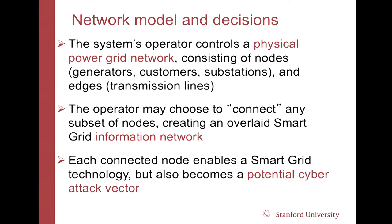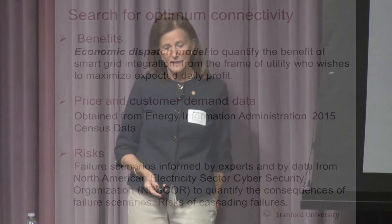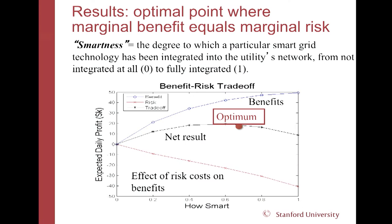What Matt Smith did with me was a network model to look at the decisions that had to be made. Operators choose to connect a subset of nodes and create an overlaid smart grid information network over the physical network. Every new node is a potential cyber attack vector. So we looked for the optimum connectivity and tried to compute the benefits — price and customer demand data so that we knew how good it was for the consumer — but also the risks. We focused on risk and failure scenarios informed by experts and by data from NESCOR, the North American Electric Sector Cybersecurity Organization.